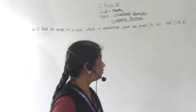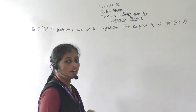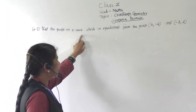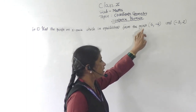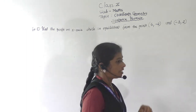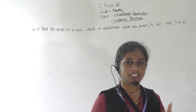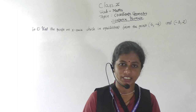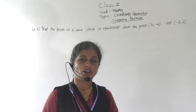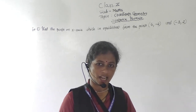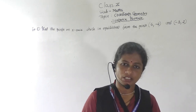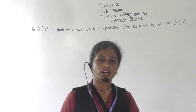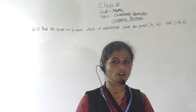Welcome back. Today we are going to see once again examples on the distance formula. See the example: find the points on the x-axis which are equidistant from the points (5, -2) and (-3, 2). In the basic part of this lesson we learned that when any point lies on the x-axis, the coordinates of that point are (x, 0) — the y-coordinate is zero. Similarly, if the point is on the y-axis, the x-coordinate becomes 0.